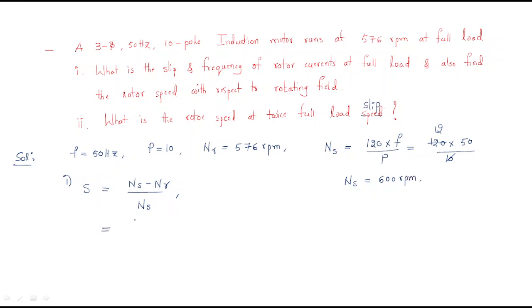Substituting into the slip formula: s = (600 - 576) / 600. So the slip value is 0.04. This is the full load slip.